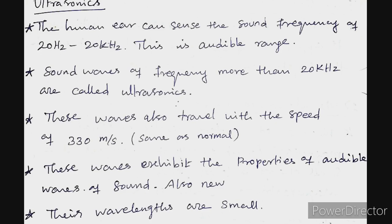What are ultrasonic waves? The human ear can sense sound frequencies from 20 Hz to 20 kHz — this is the audible range. Sound waves above this range are called ultrasonic waves.